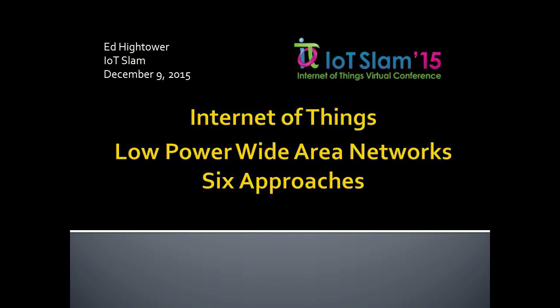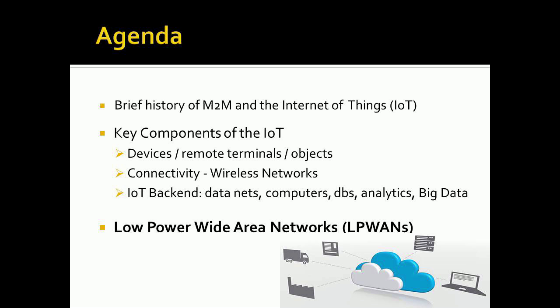Today I'm focused on the Internet of Things, and I want to talk to you about low-power wide-area networks. There are six approaches that are getting people's attention, that are getting momentum, and there are many other ones coming as well. So this is the wild west of low-power WANs right now — a lot of competing approaches and protocols and business models. It's going to be very interesting to watch it unfold.